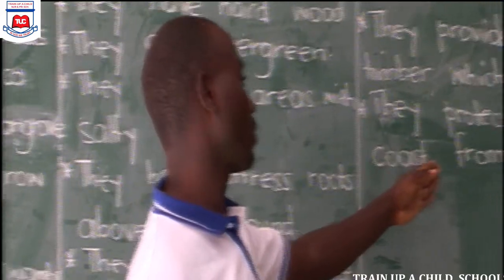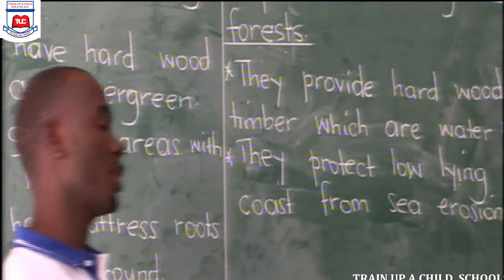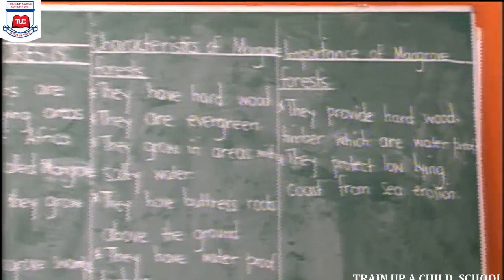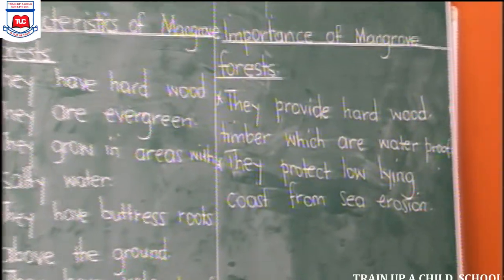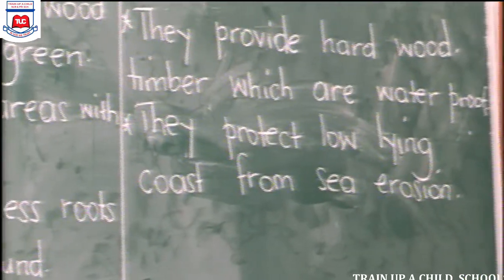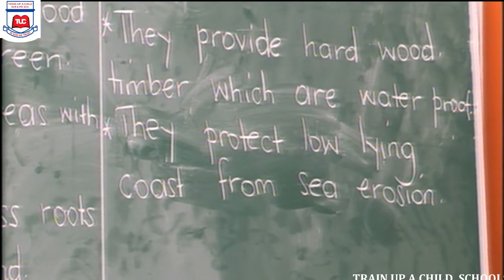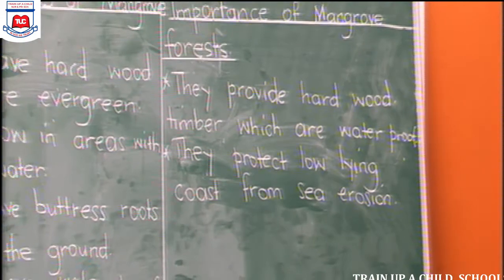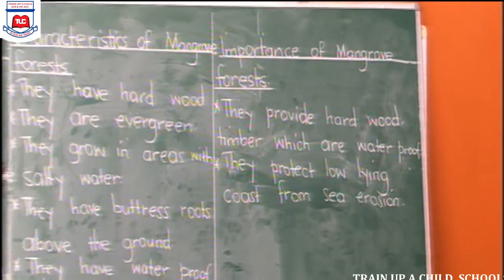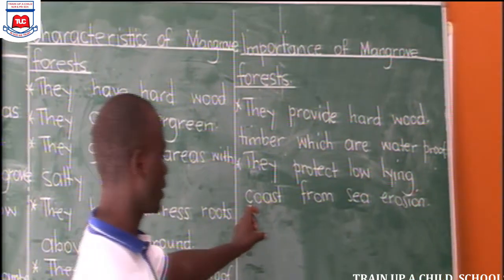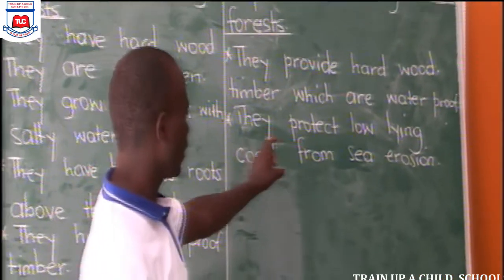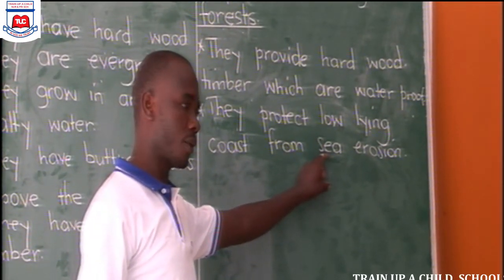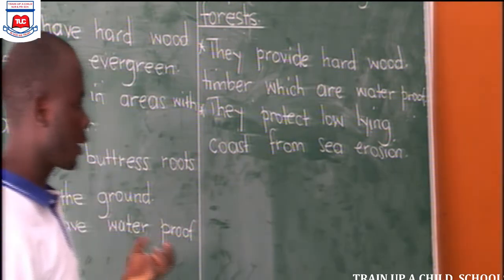Another value: they protect low-lying coast from sea erosion. They protect low-lying coast from sea erosion. How? By trapping mud. They protect low-lying coast from sea erosion by trapping mud.